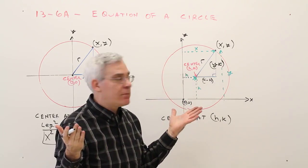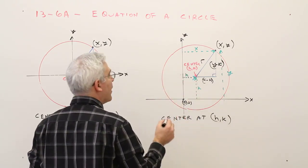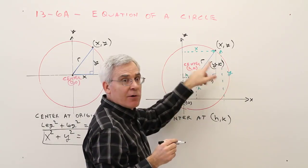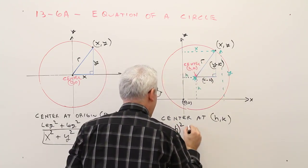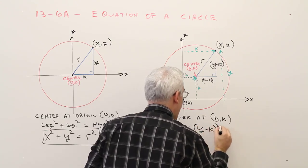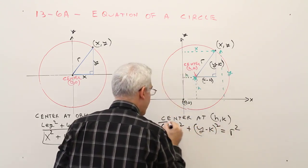Okay, boom, I've got the Pythagorean theorem again. Leg squared plus leg squared equals hypotenuse squared. x minus h squared plus y minus k squared equals r squared.